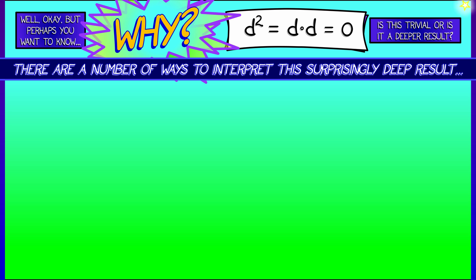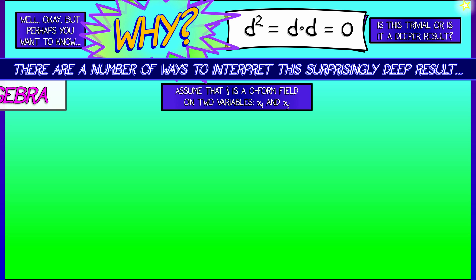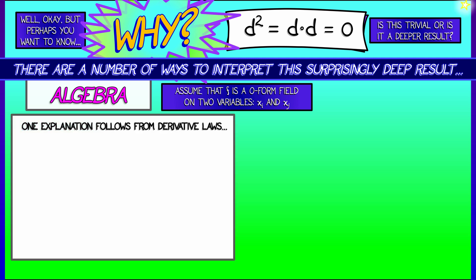Let's drop back to the simplest possible case. Let's assume that f is a zero form field, and we're just going to look at two of the variables that it might depend on. Let's say xi and xj.